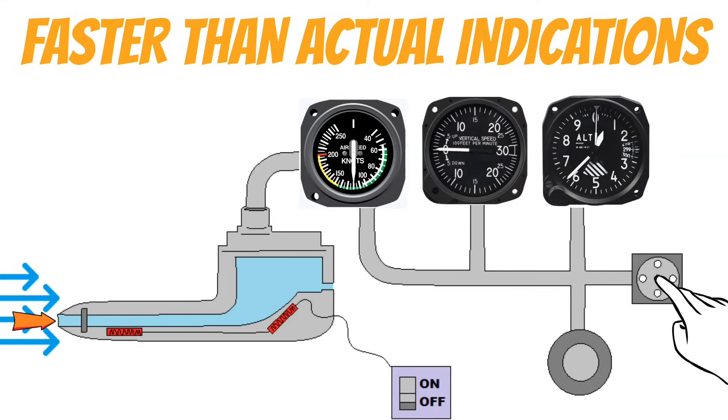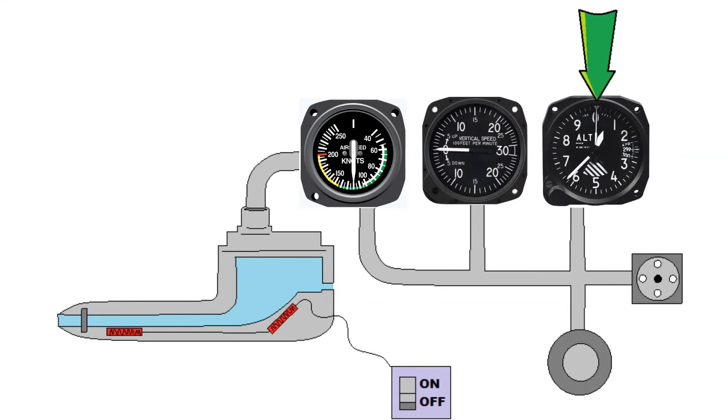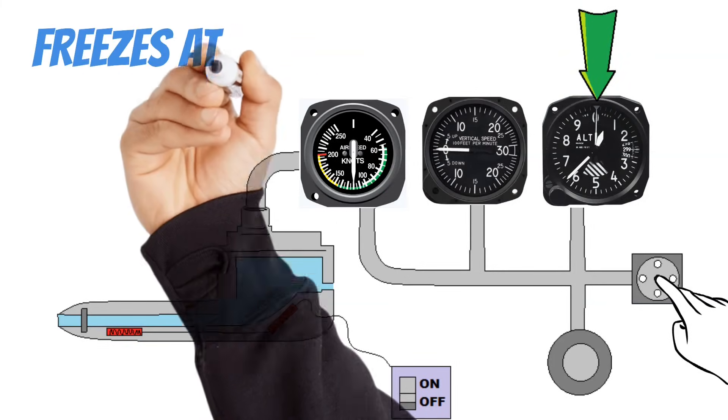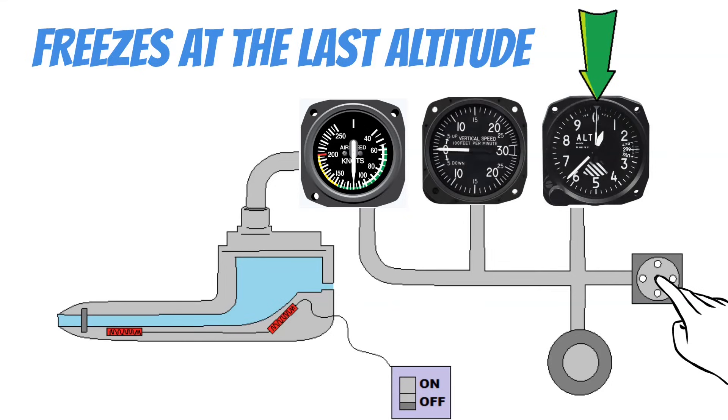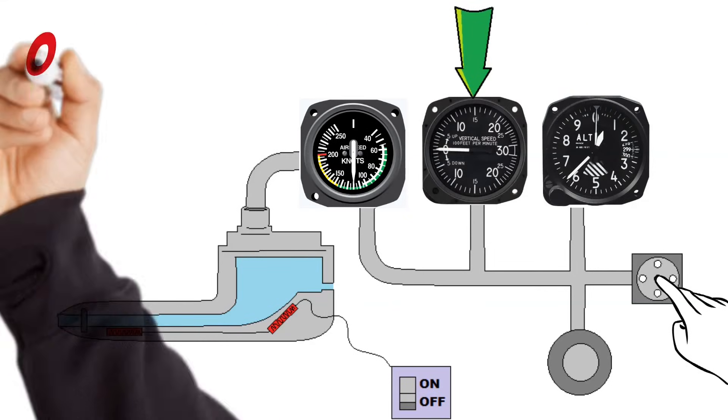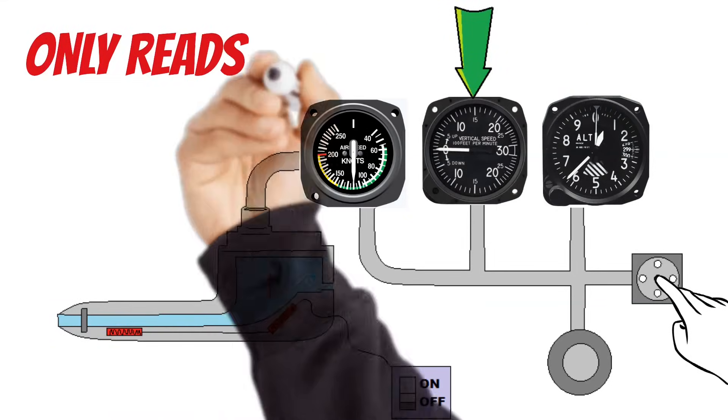Now, because the altimeter and the vertical speed indicator both use the static port to get their information, if this gets clogged, it's going to affect both of those too. For the altimeter, if the static port gets clogged, it's going to freeze at the last altitude that it was indicating. But the vertical speed indicator will only display zero because it can no longer sense a climb or a descent.